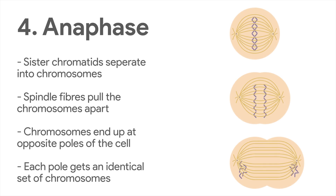During anaphase, sister chromatids separate into distinct chromosomes. Remember, each chromatid is attached to the spindle fibers, which means that as the spindle fibers start to shorten and pull back towards the centrosomes, the newly separated chromosomes are then pulled towards the opposite poles of the cell. At the end of anaphase, each pole has an identical set of chromosomes.